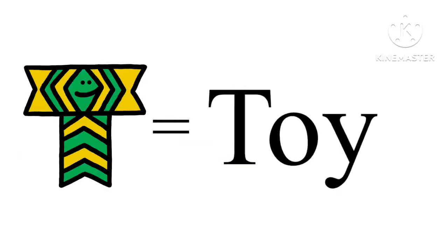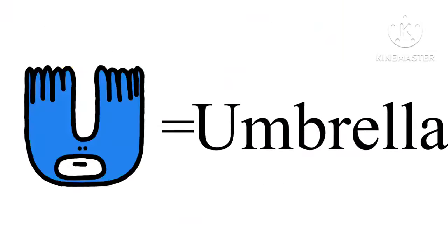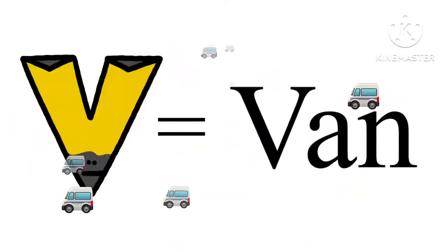T is for Toy. U is for Umbrella. V is for Van.